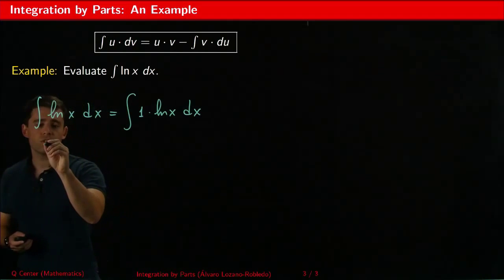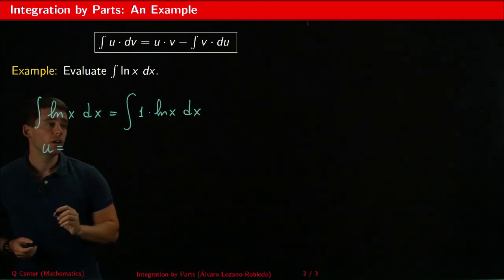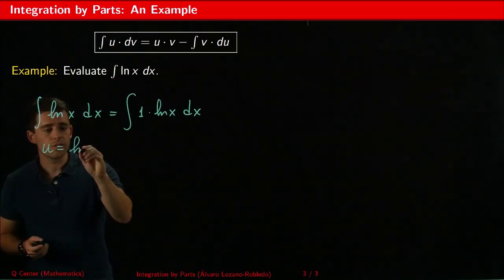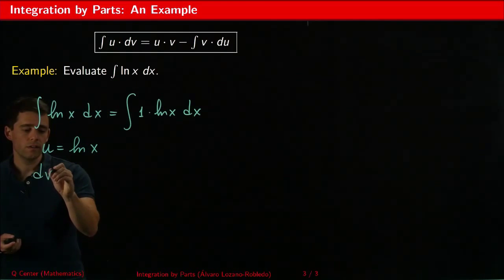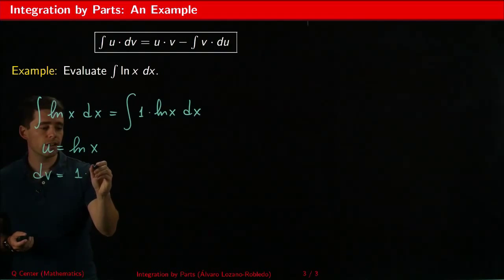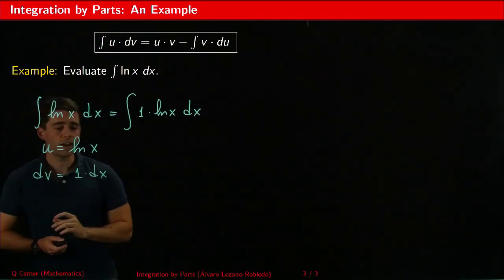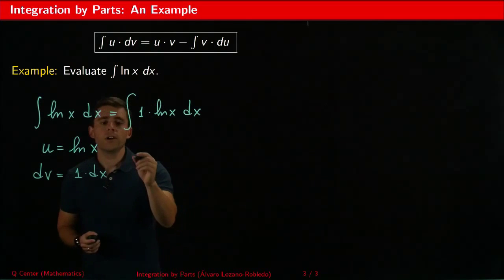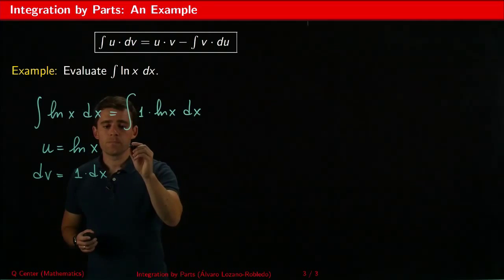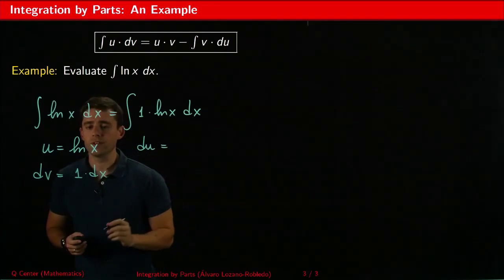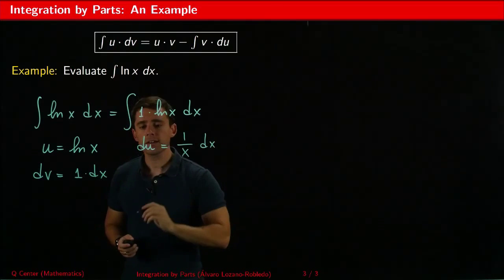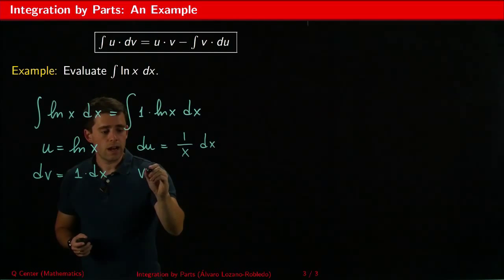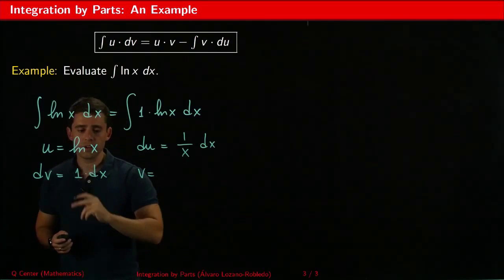So we can take our choices of u are going to be ln x. I know how to take a derivative of ln x and it makes it a somewhat easier function to work with. And my dv is going to be 1 times dx because I know how to integrate the function 1. So now we can find what is du. Remember the derivative of ln x is 1 over x dx.